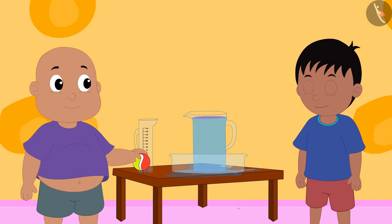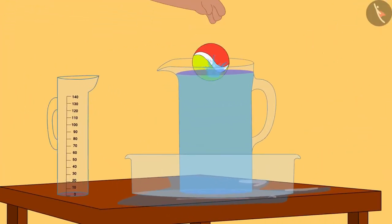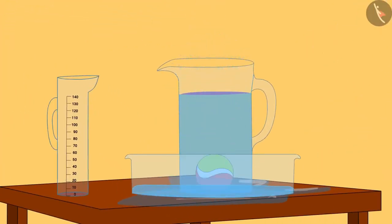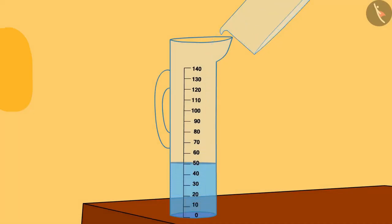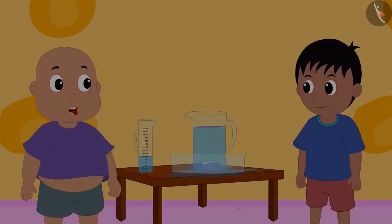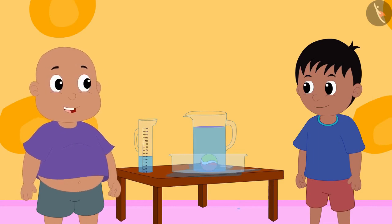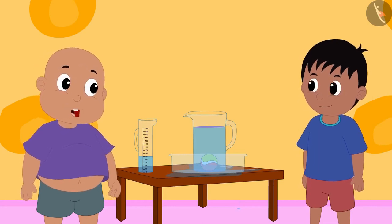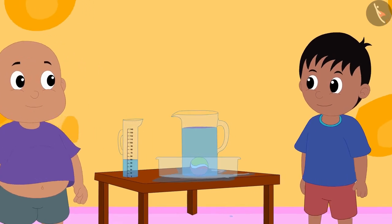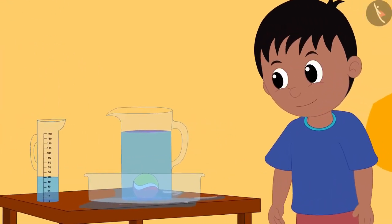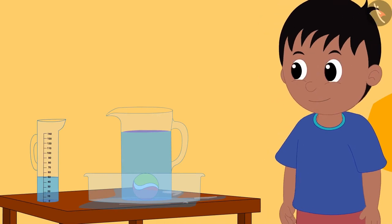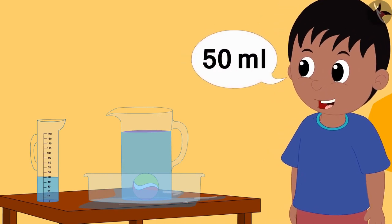Bablu put the ball into the jug and once again water got spilled and he filled it in the measuring cup. Raju, can you tell me how much water is in the measuring cup? Looking at the surface of the water filled in the measuring cup, Raju said: 50 milliliters.